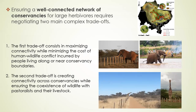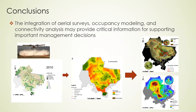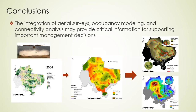The future direction of this work is to look at regional connectivity between these key landscapes. A single tracked elephant has shown the need to connect Laikipia, Isiolo, and Samburu counties. There is even more data showing greater connectivity. We need to expand the scale of analysis to continue identifying key areas that wildlife uses within Laikipia and Samburu habitats. The integration of aerial surveys, occupancy models, and connectivity analysis has proven to provide critical information supporting important management decisions.